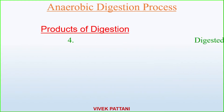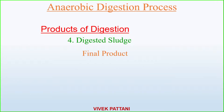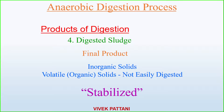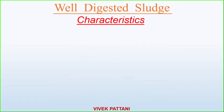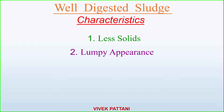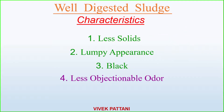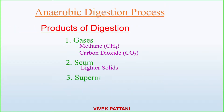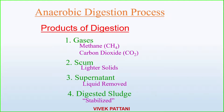The final product is digested sludge, which contains inorganic solids and volatile organic solids that were not easily digested. The sludge is ultimately stabilized. Characteristics of a well-digested sludge include a reduced amount of solids, a lumpy appearance, black color, less objectionable odor, and reduced volatile content.